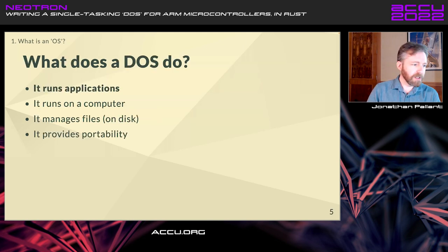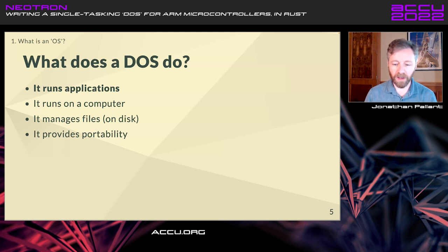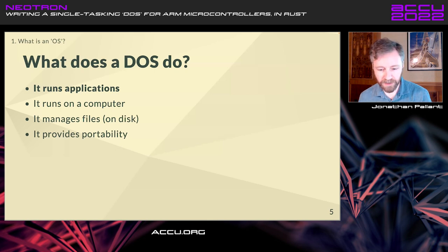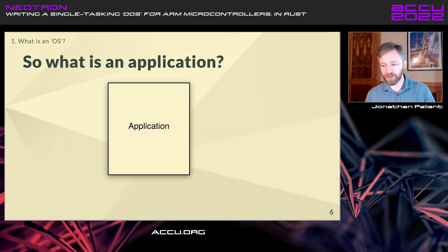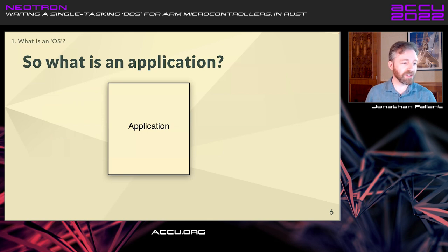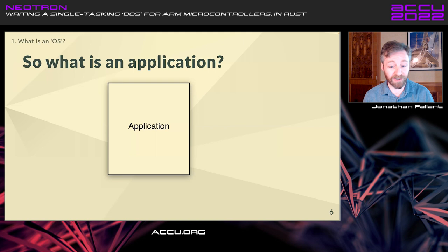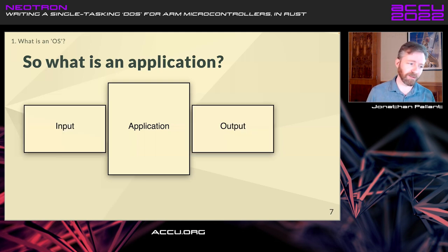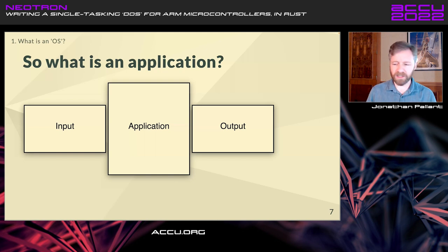What does a DOS do? It runs applications, it runs on a computer, it manages files on disk, and it gives you some level of portability. An application really deals with two things: input and output. You can frame pretty much any computer program this way - they are programs that deal with input and they produce output. The drawing app I give my kids when they're bored waiting for dinner - the input is touch input on the capacitive touch screen and the output is graphics and pixels.